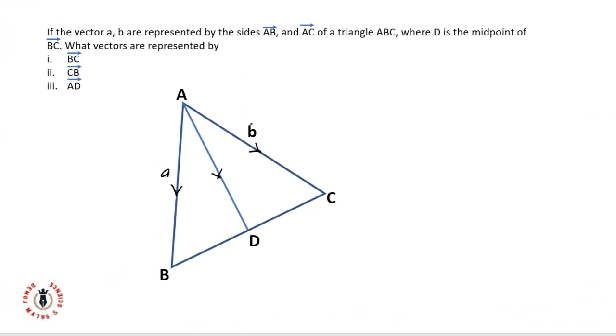Let's take a good example to further understand how to pick directions and magnitude of vectors. If the vector AB represented by the sides AB and AC of a triangle ABC where D is the midpoint of BC, what vectors are represented by BC, CB, and AD? Now if you look at it carefully, we've been told that D is a midpoint, so BD and DC are equal.